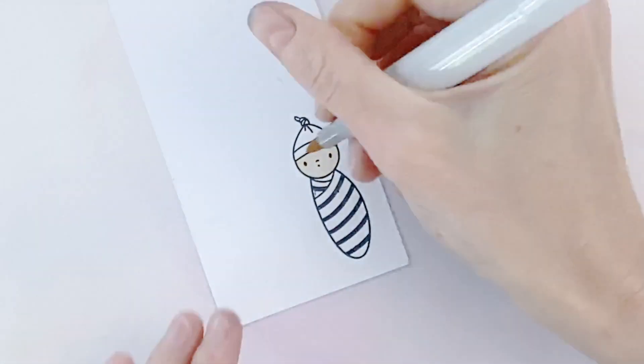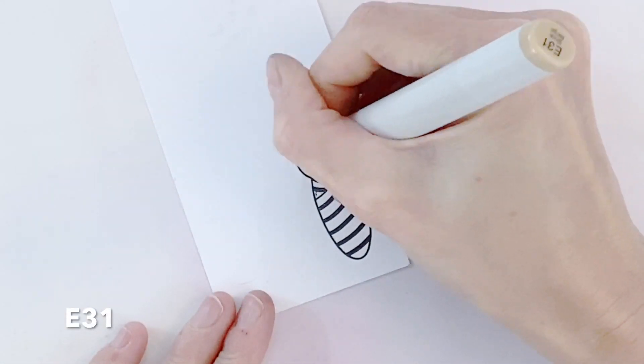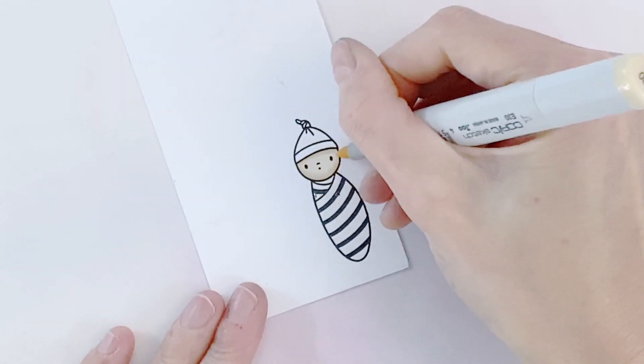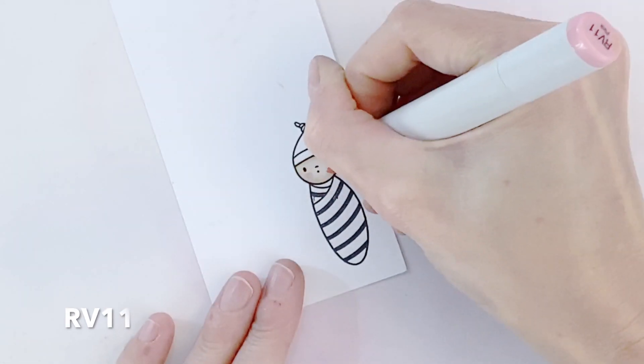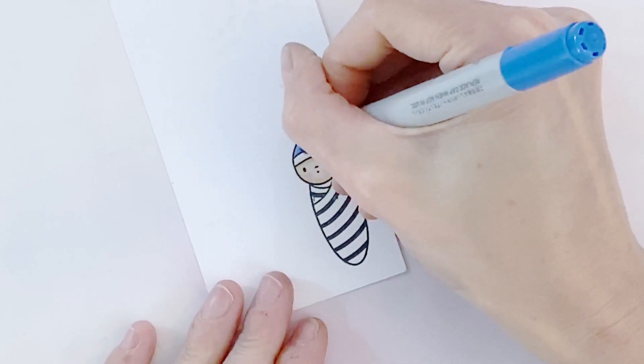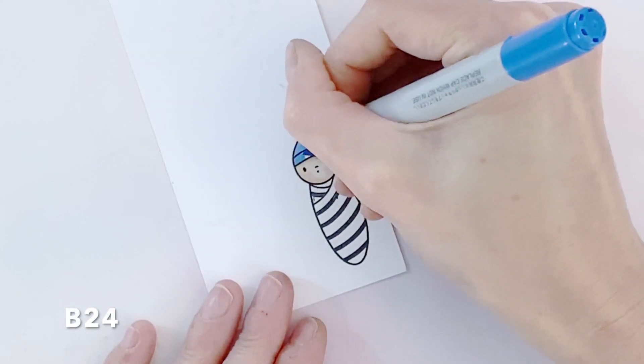I'm going to color the baby's face first. I just have some really light tans picked out for that. And then I'm going to add some rosy cheeks with RV11. All the colors I am using are on screen so you can follow along.